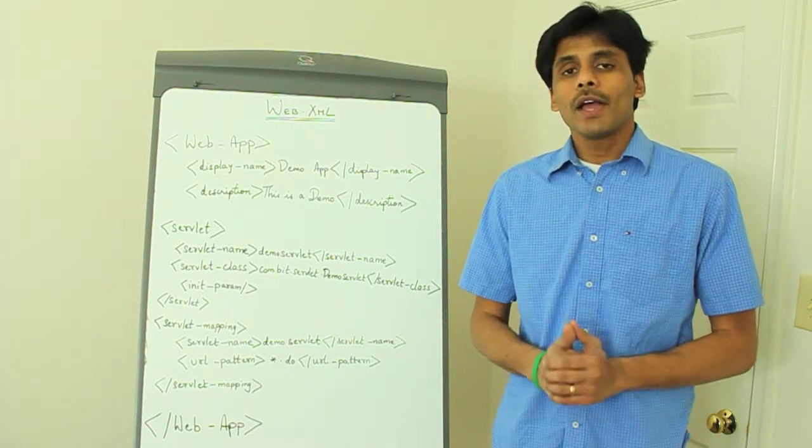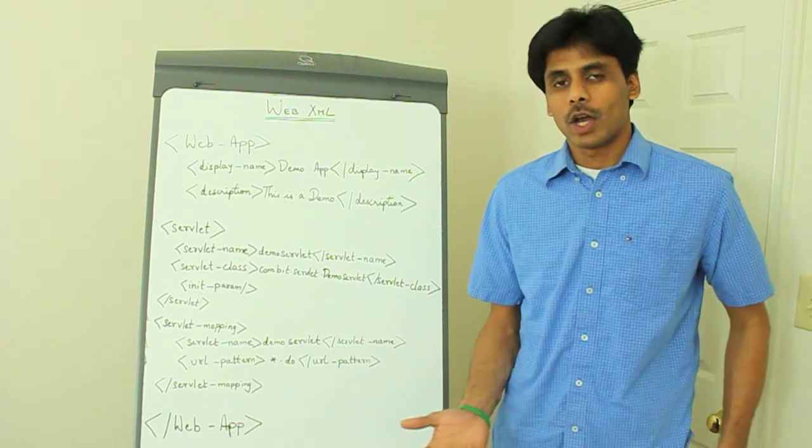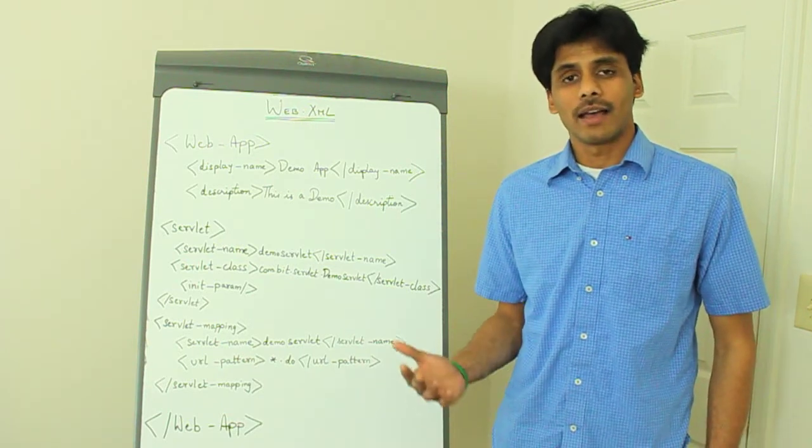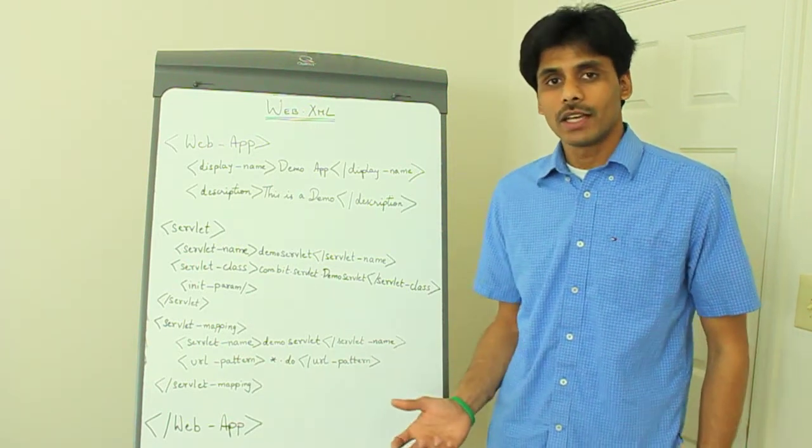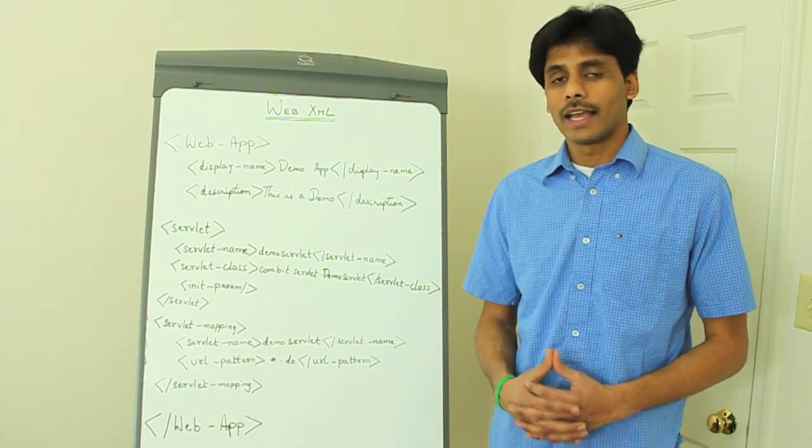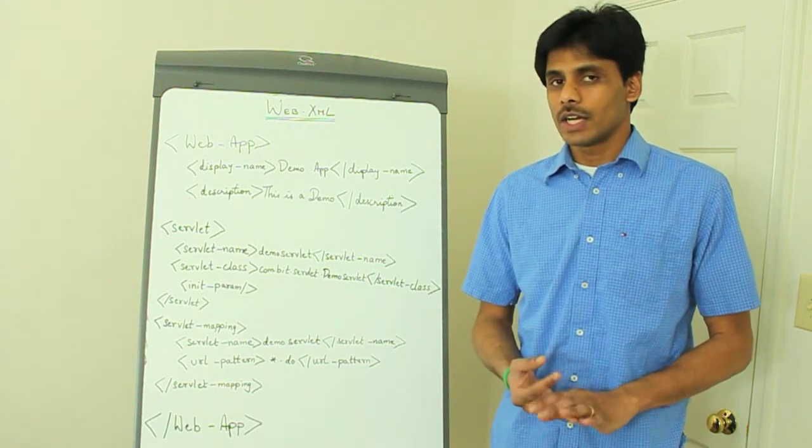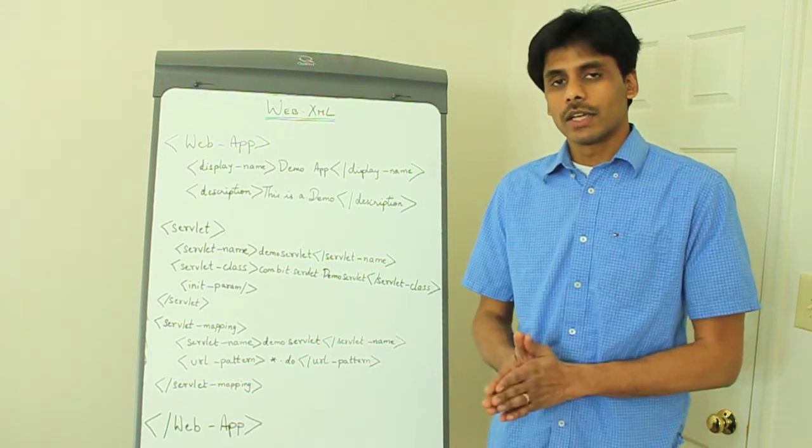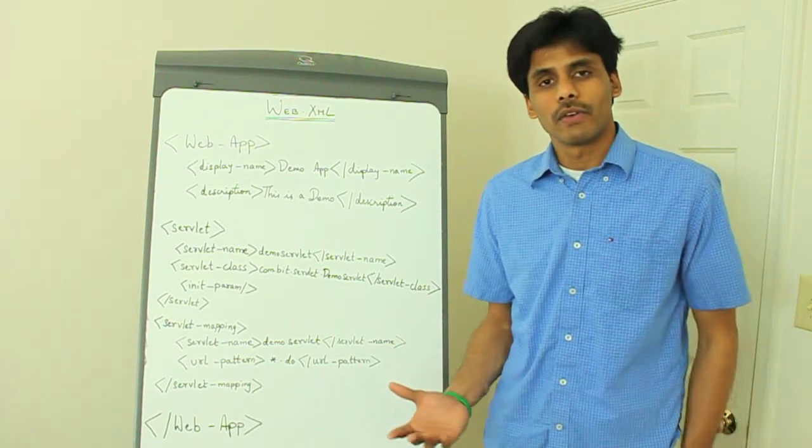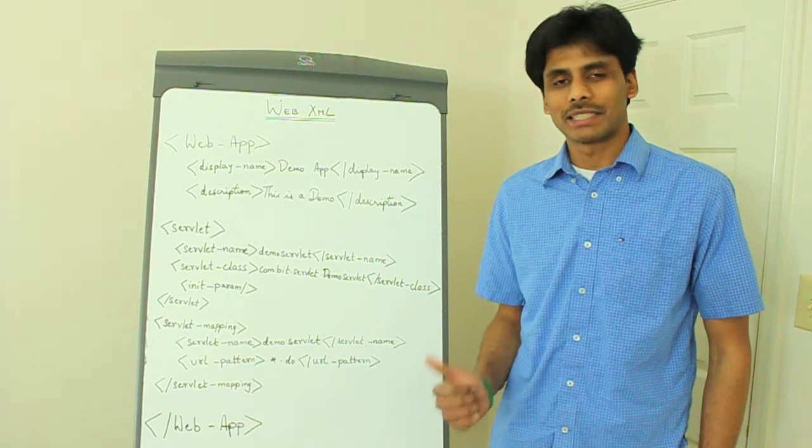When you deploy your J2EE web applications on web containers like Tomcat or application servers like WebSphere or WebLogic, these application servers provide your web applications with services like database connection pooling, transaction management, etc. And to use these services or to configure these services for your web application, you use the deployment descriptor file or the web.xml file.